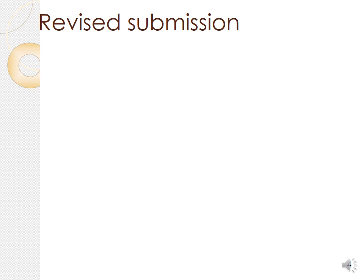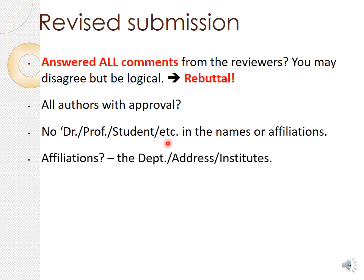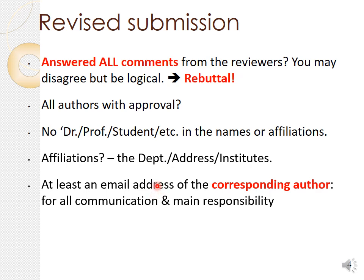When our paper is accepted with minor or major revision, we try to go for a revised submission. In the revision, make sure that you do a proper rebuttal — answer all comments from the reviewers. If you disagree, be logical and mention that you don't agree with the reviewer on this point and give the reason. All authors must give their approval — without their prior approval you must not submit. Don't use 'Doctor', 'Professor', 'Student' in the names or affiliations. Affiliations mean departments, address, institutes, and so on. Include at least one email address of the corresponding author.